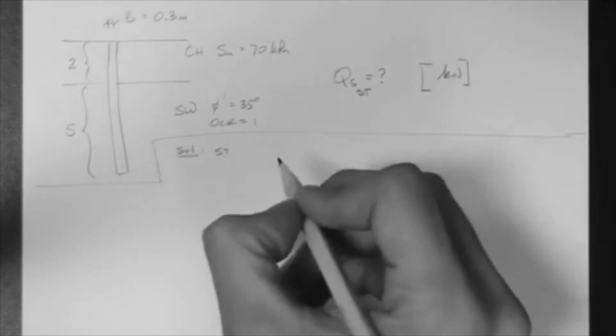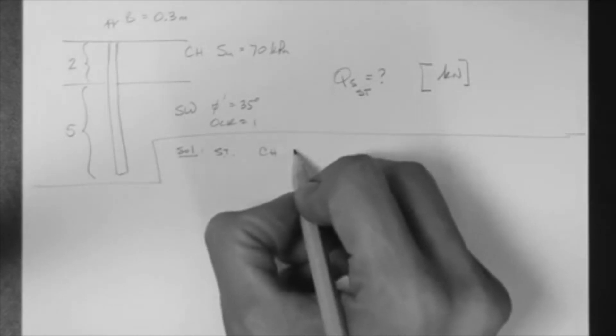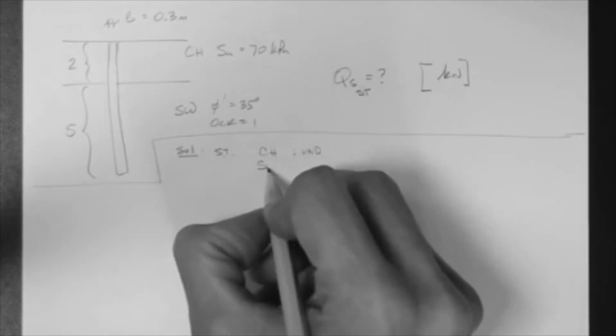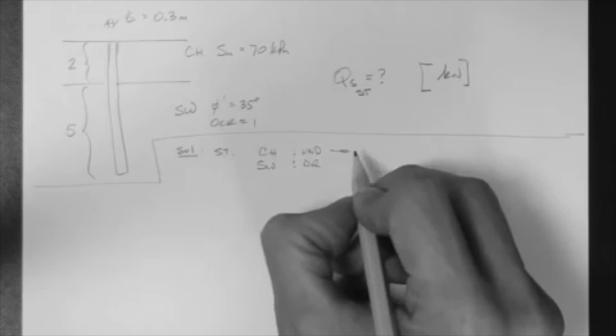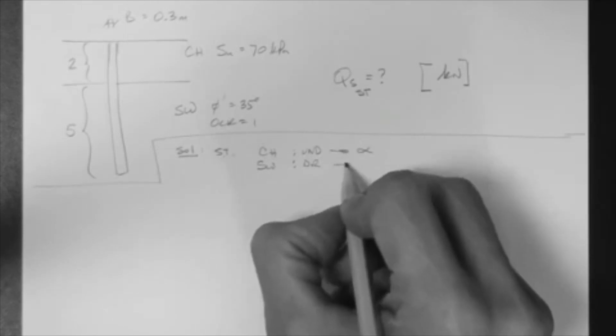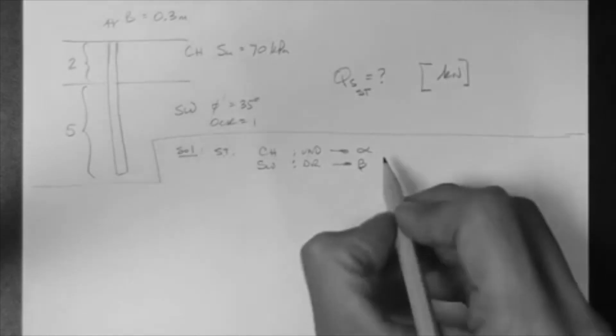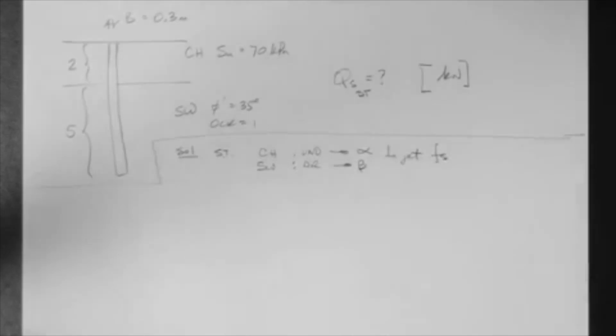In the short-term, the clay layer is going to act undrained, and the well-graded sand layer is going to act drained. So for this case, we have to use the alpha method, and for this case, we have to use the beta method to get the Fs.